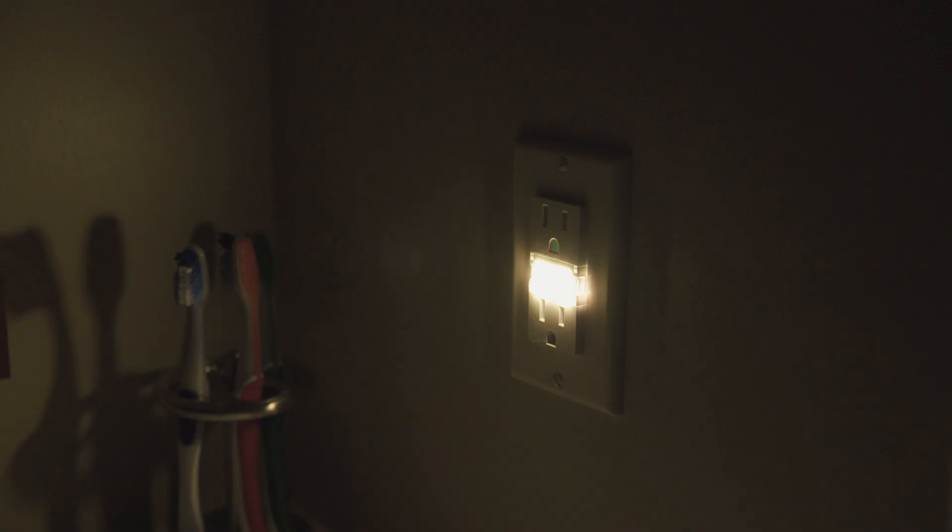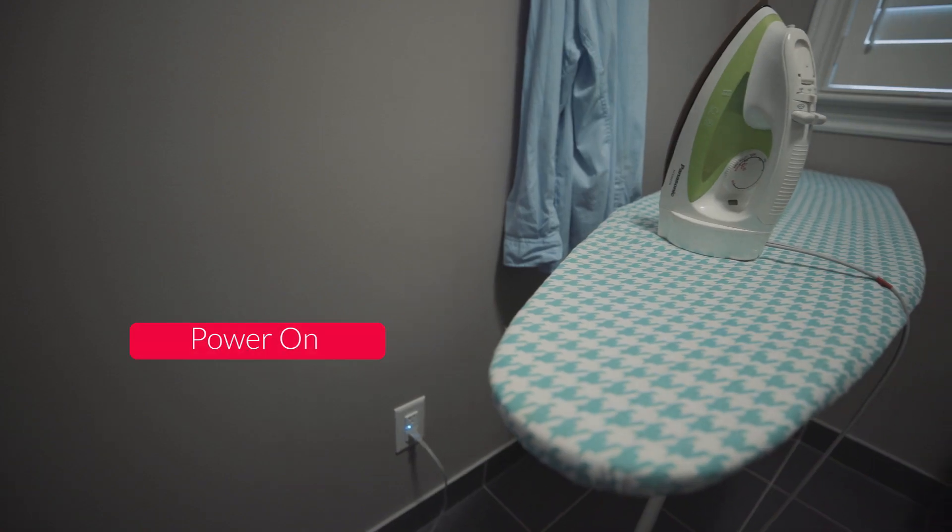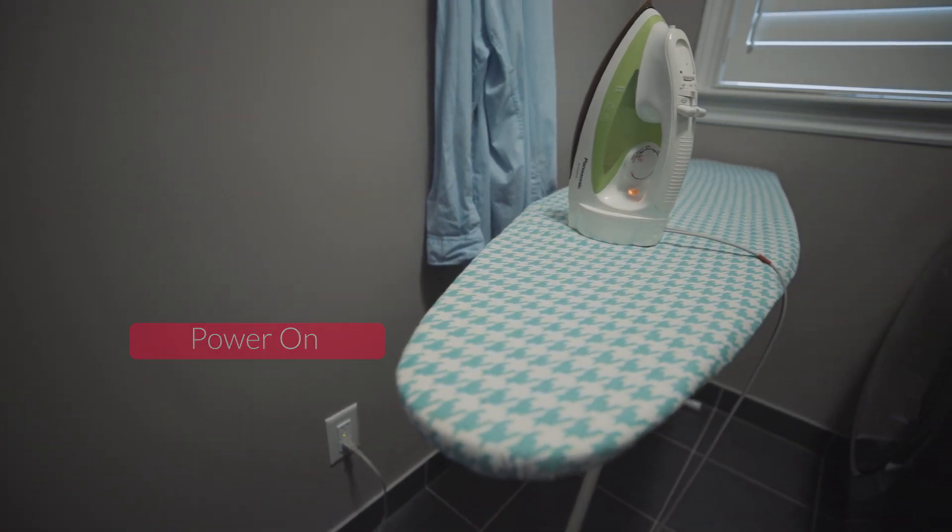A nightlight doesn't need to stick out from your wall. A temperature sensor doesn't need to go on your dresser. A carbon monoxide sensor should be low to the ground. A motion sensor shouldn't be visible. An outlet should be controlled from within. This is why we created Swidget.